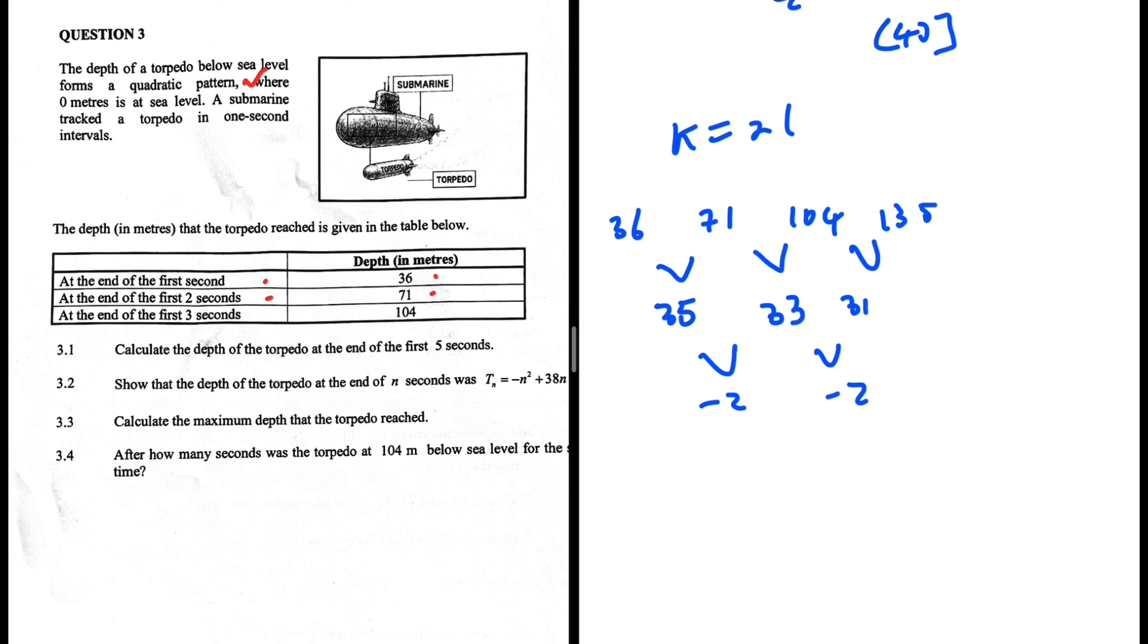Then 135 plus 29 equals 164. So the answer for 3.1, the depth equals 164 meters after five seconds.